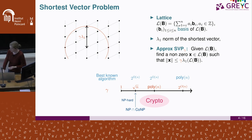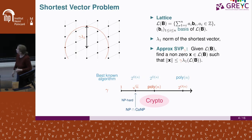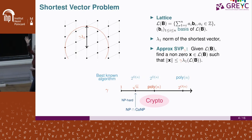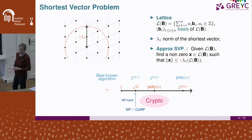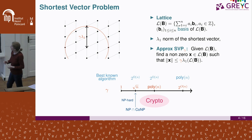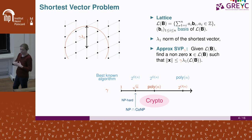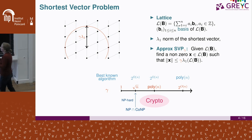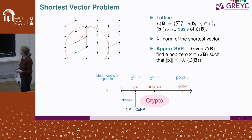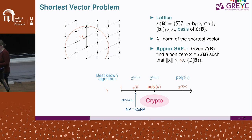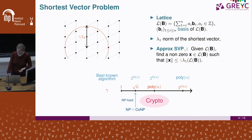That's where lattice-based cryptography starts. But we cannot use SVP directly, because the input is a basis of a lattice, and that basis can be a good or bad one — easy or hard to solve. If the shortest vector is already in your basis, it's very easy. We need problems which are always difficult, because you don't want a scheme that can sometimes be attacked and sometimes not — you want it to be safe all the time.